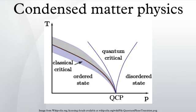The most familiar condensed phases are solids and liquids, while more exotic condensed phases include the superconducting phase exhibited by certain materials at low temperature, the ferromagnetic and antiferromagnetic phases of spins on atomic lattices, and the Bose-Einstein condensate found in cold atomic systems.